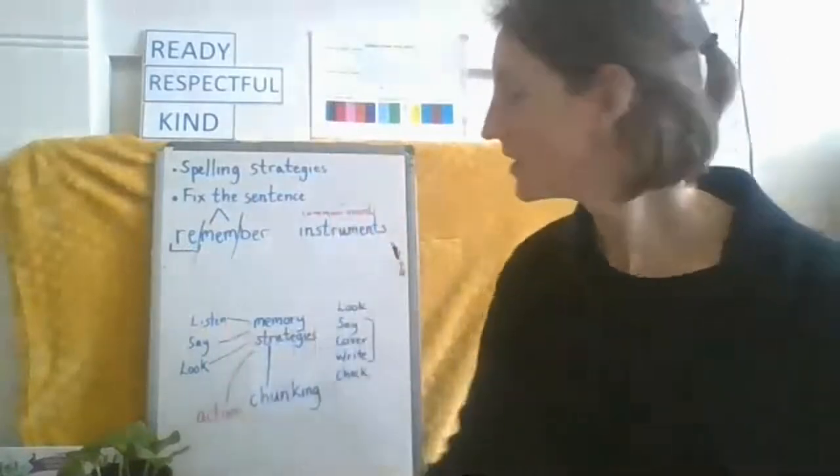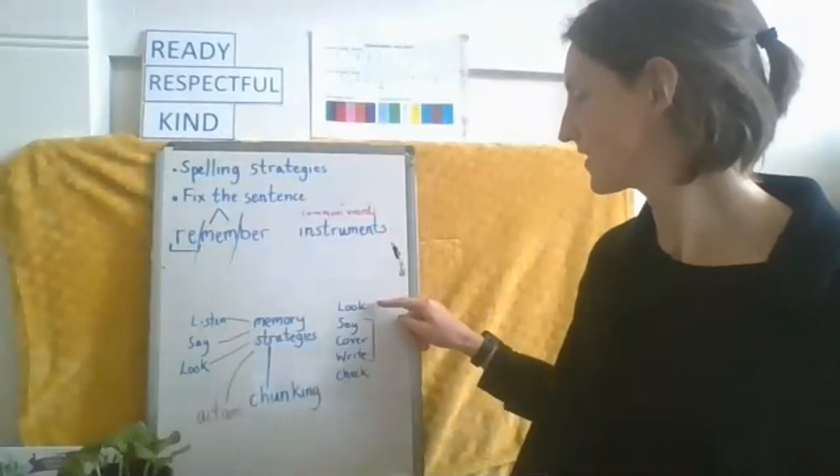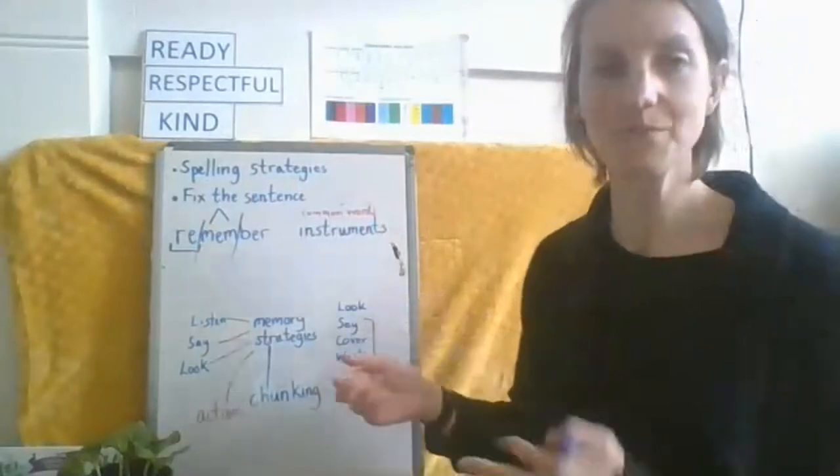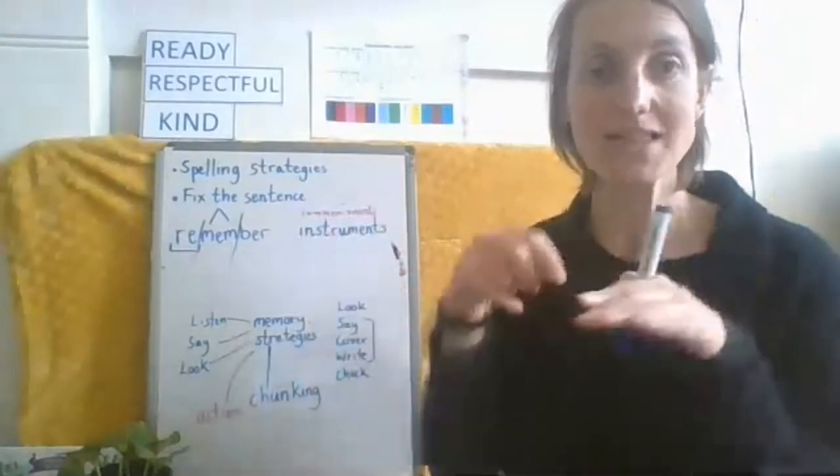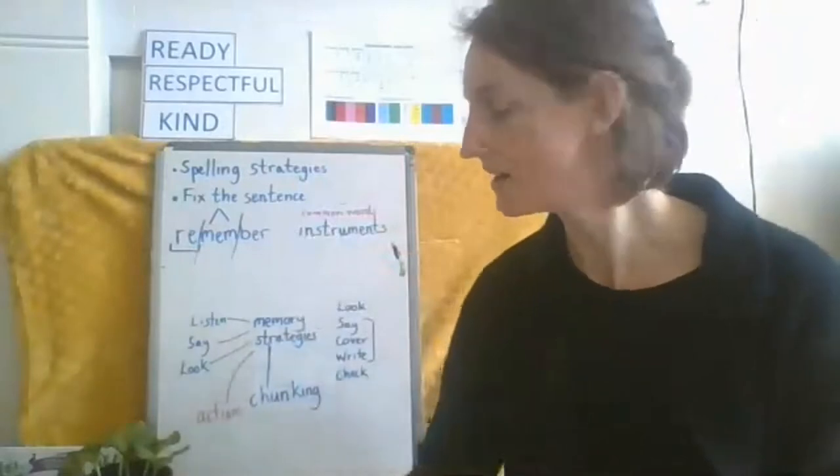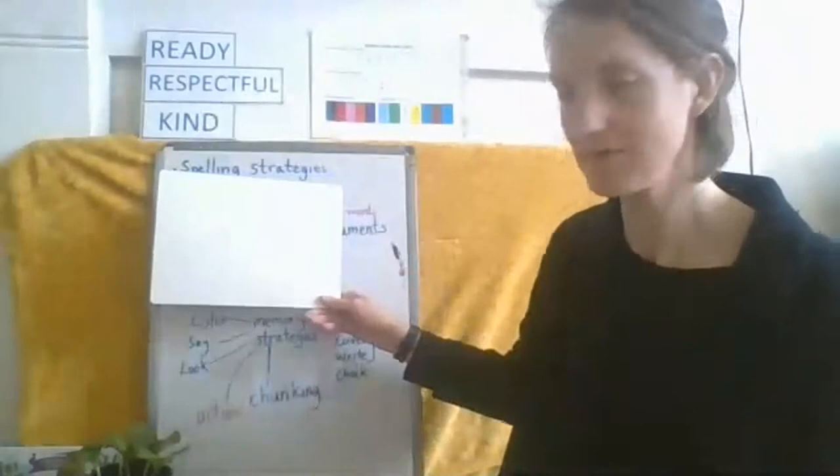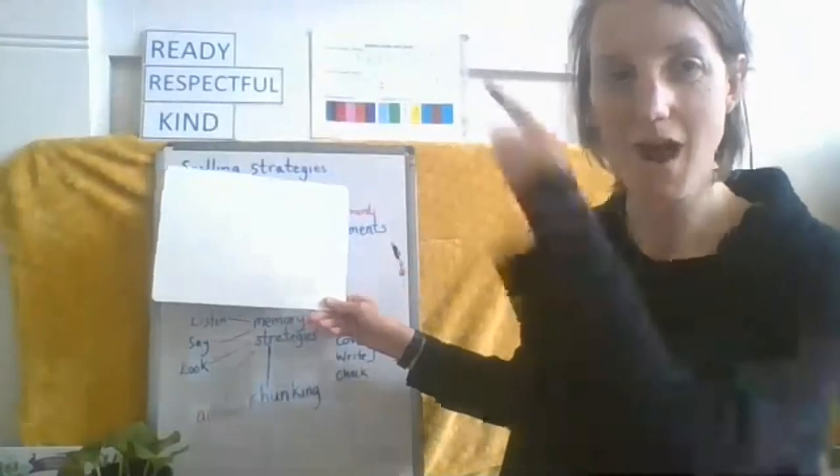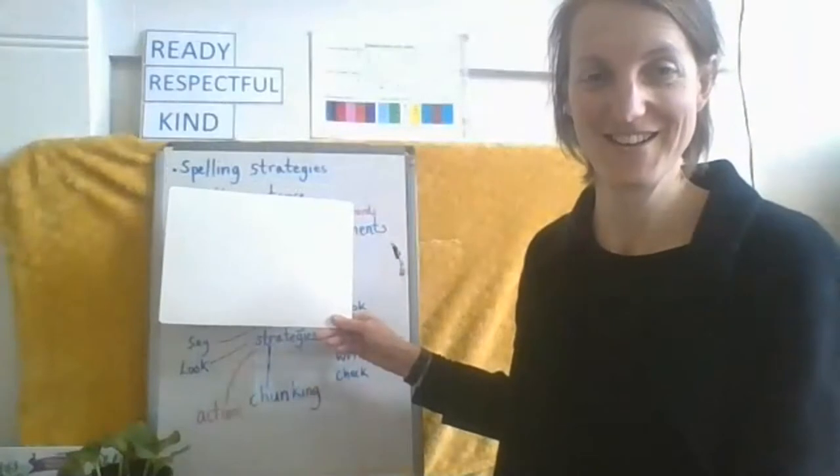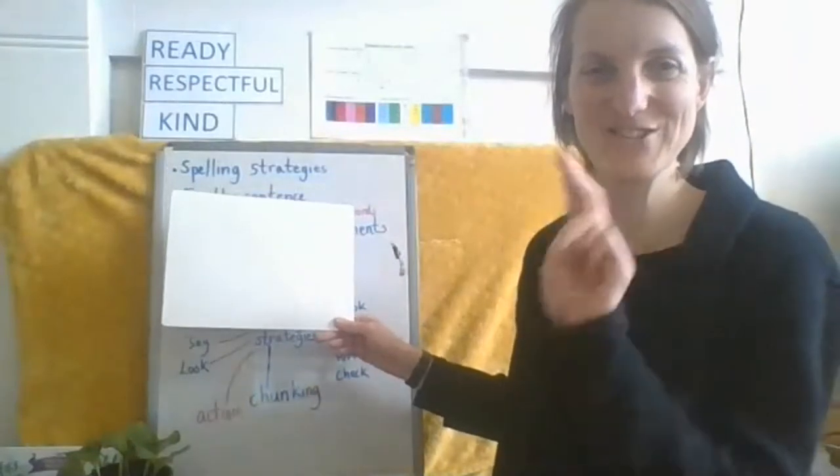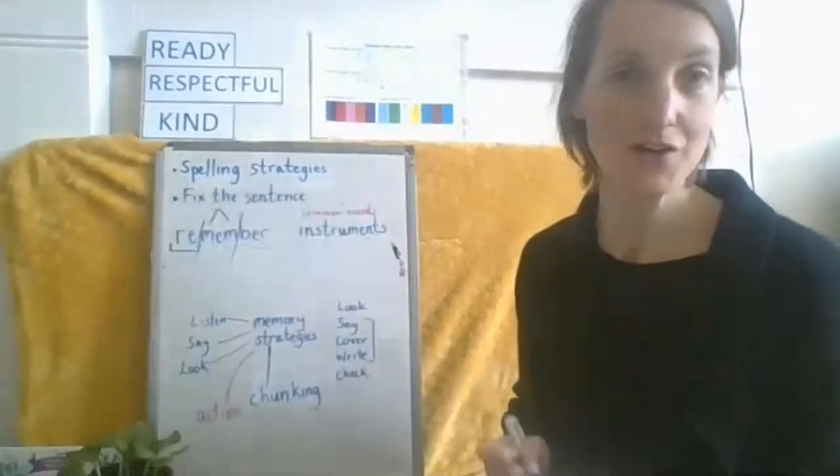So then we use our method look, say, cover, write, check. We've already done looking and saying. This time when you cover it up, I want you to say the letters of the word at the same time as you write it. Are you ready? Look at the word. Three, two, one. Can you write it down for me, please? Remember. Three, two, one. And show me.